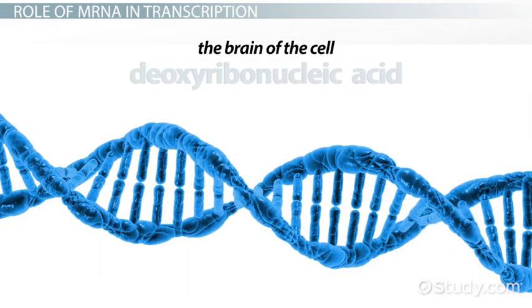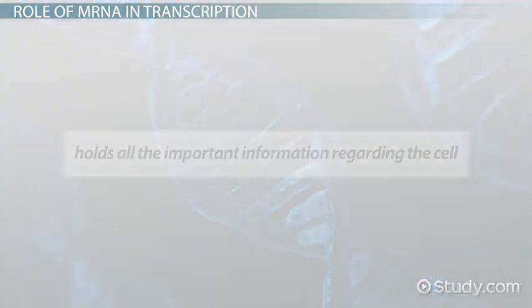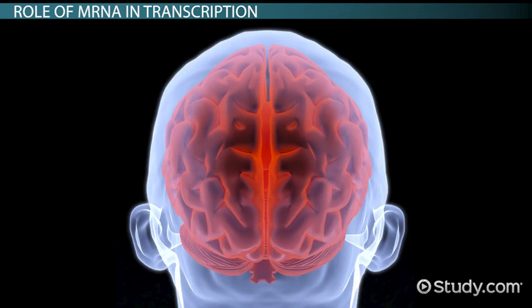The brain of the cell is deoxyribonucleic acid, or DNA. It holds all the important information regarding the cell. DNA lives inside a safe structure called the nucleus, which is much like the skull in that it keeps the brain safe.